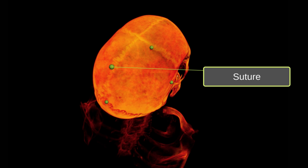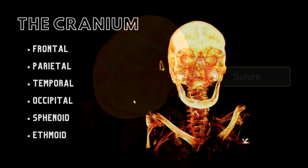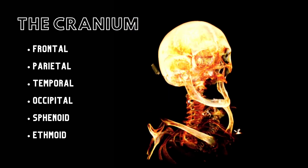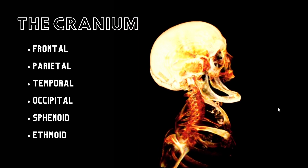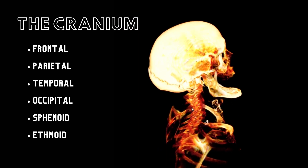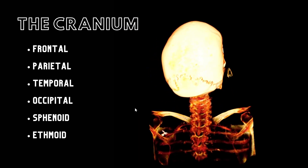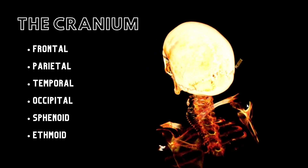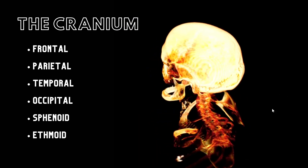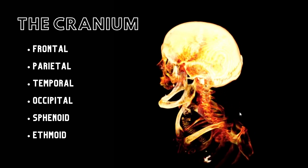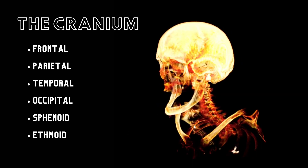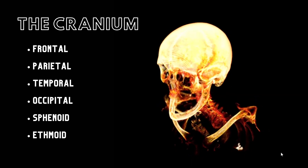The bones of the cranium are the frontal bone, paired parietal bones, paired temporal bones, the occipital bone, the sphenoid bone, and the ethmoid bone.